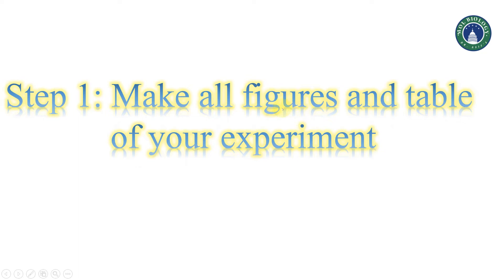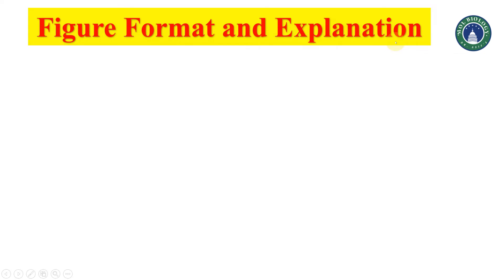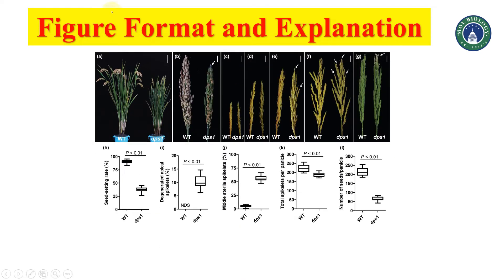Before we go into further details on how to explain the results and table sections, we can understand how the expression of figures goes in any published system. Figure format and explanation is important. Here is an example of a published article — in figure one we can see letters A, B, C, D, E, F, G. These are called panels: panel A, panel B, C, D. So one figure is composed of several panels.